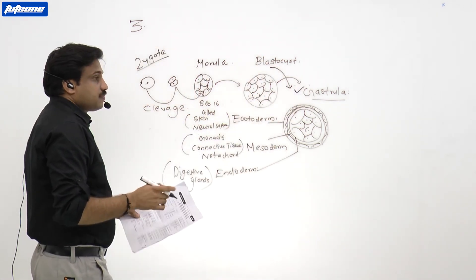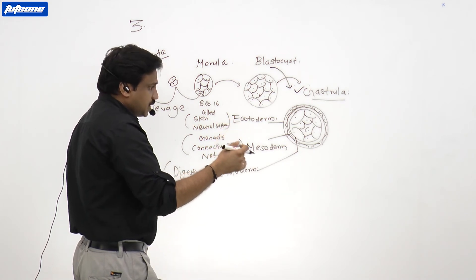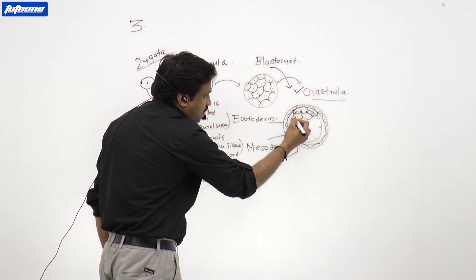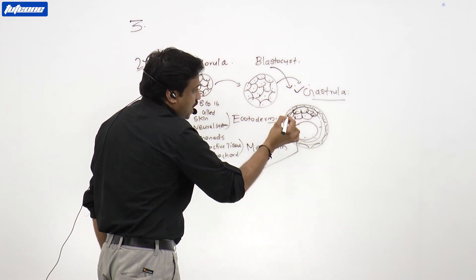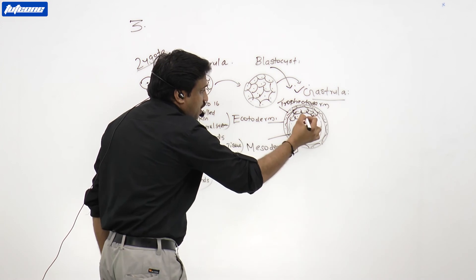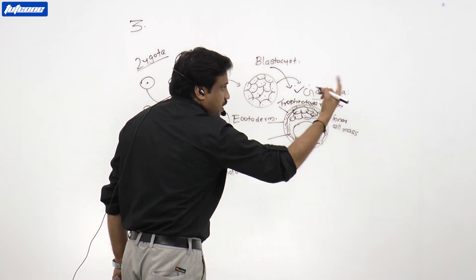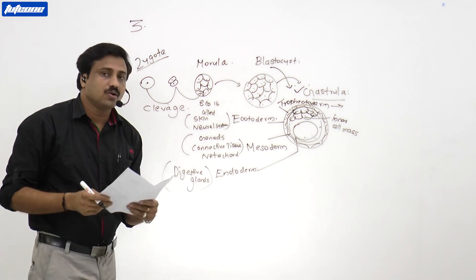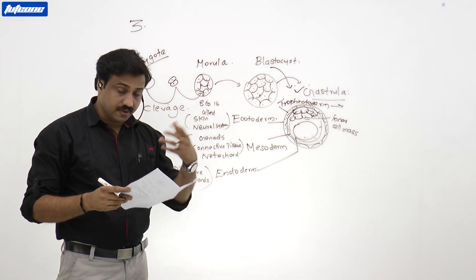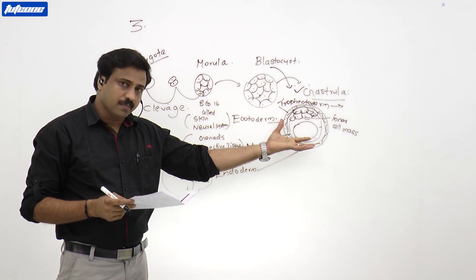After gastrulation, cells undergo further morphogenetic movement. The rearrangement of cells results in the formation of an inner cell mass and an outer trophectoderm surrounding a cavity. The trophectoderm converts into extra-embryonic membranes including the placenta, while the inner cell mass converts into the embryo itself.